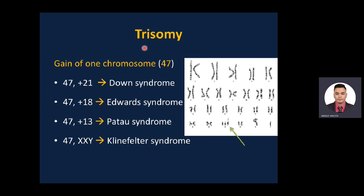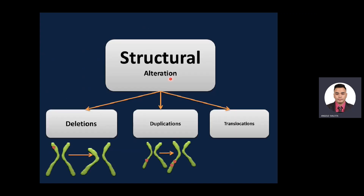The second famous example of aneuploidy is trisomy — a gain of one chromosome, giving 47 instead of 46. If the extra chromosome is chromosome 21, this is Down syndrome. An extra chromosome 18 gives Edwards syndrome. An extra chromosome 13 gives Patau syndrome. An extra sex chromosome — an additional X — gives Klinefelter syndrome.